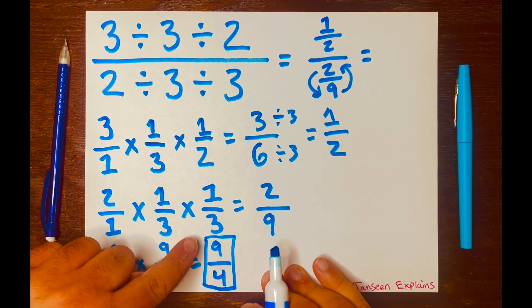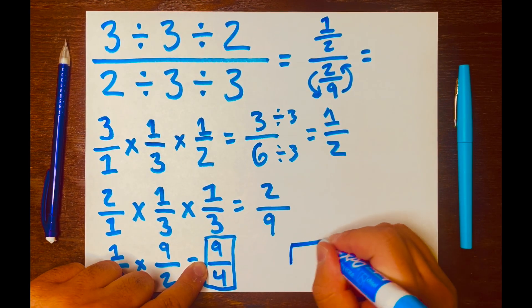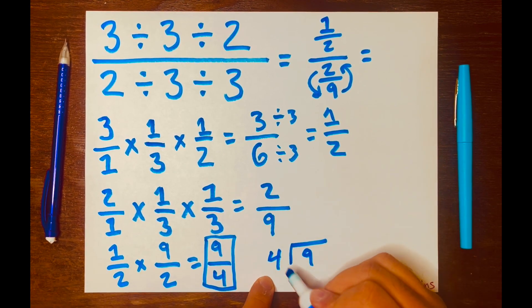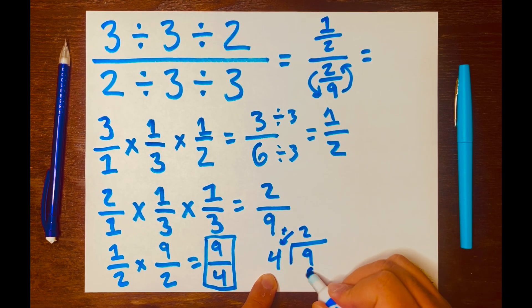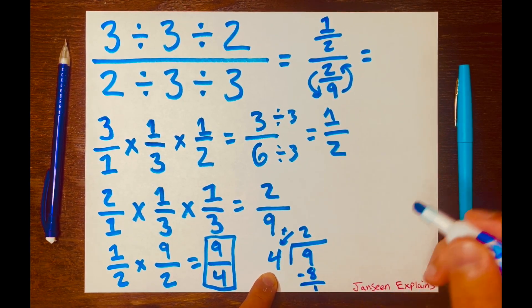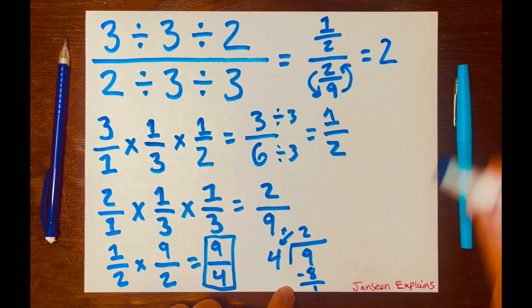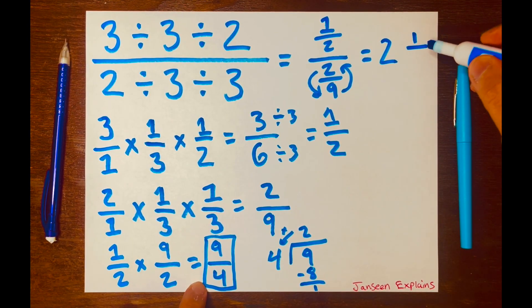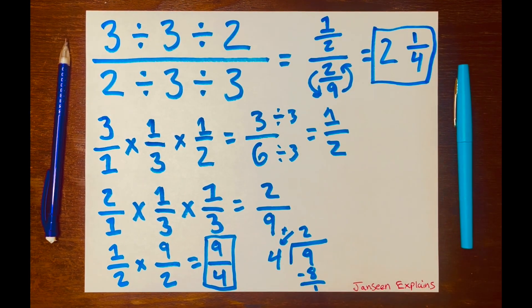We can turn this into a mixed number because nine over four is an improper fraction. Using long division: nine will be the dividend, four will be the divisor. How many times can four fit into nine? Two. Multiply: two times four is eight, leaving a remainder of one — nine minus eight is one. So your whole number is two, your remainder one goes above the fraction bar, and your denominator is four. Your answer is two and one-fourth.